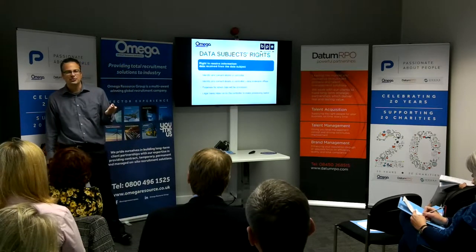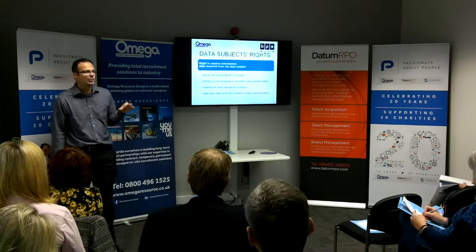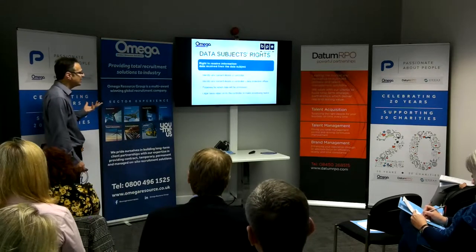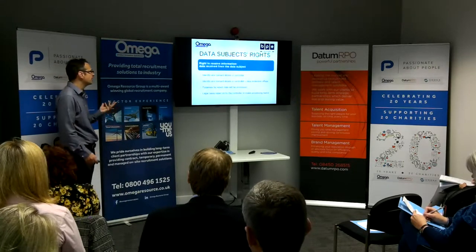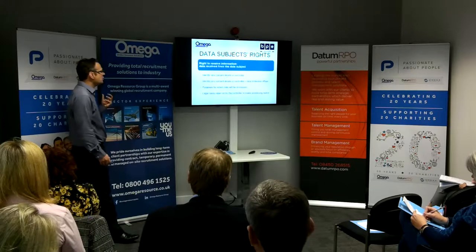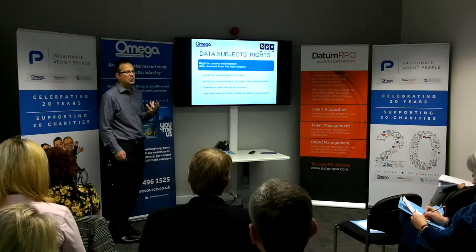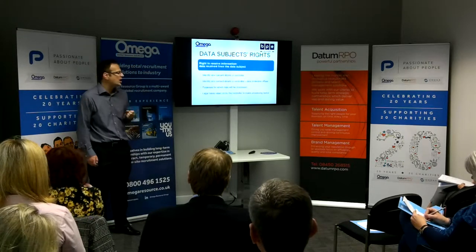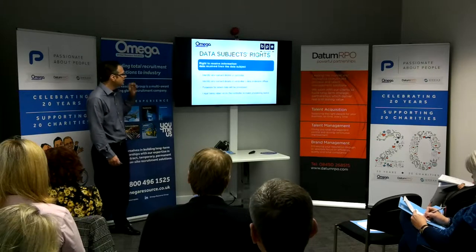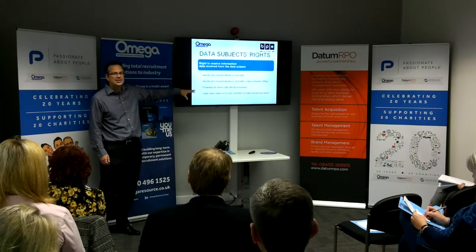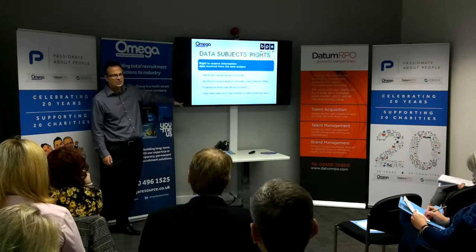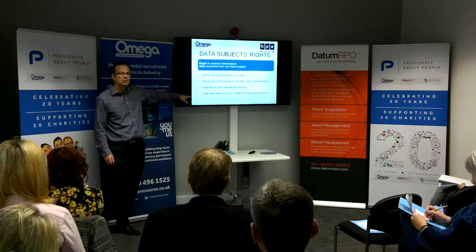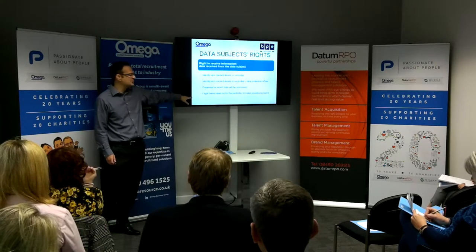If you have a data protection officer — and we'll come on to whether you need one — you've got to give their contact details. You have to explain what purposes you're going to be processing that individual's information for, and you have to explain the legal basis — which of the six grounds you're relying on to process their data.